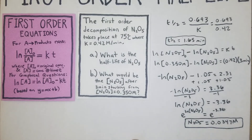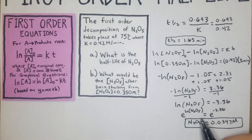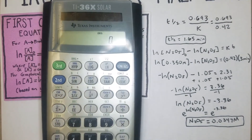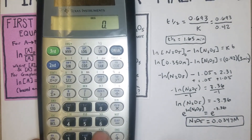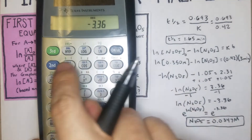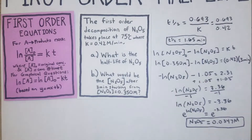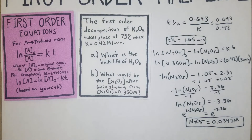That last step is kind of like advanced algebra. On my calculator — it's an older one — I entered 3.36 negative, then pressed second and e to get the answer. That's how I got 0.0347 M. That wraps up the first problem.